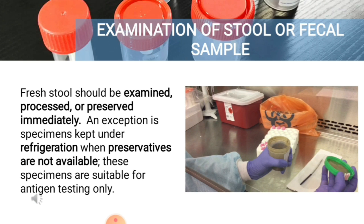Ideally, unpreserved specimens should arrive in the laboratory within 1–2 hours after passage. Older specimens, especially those containing trophozoites, may be erroneously reported as negative. Therefore, fresh stool specimens should be examined, processed, or preserved immediately. An exception is specimens kept under refrigeration when preservatives are not available; these specimens are suitable for antigen testing only.